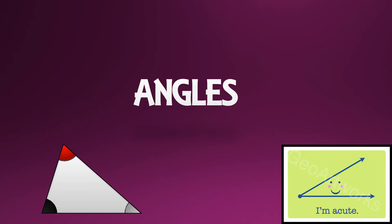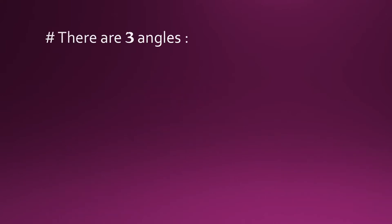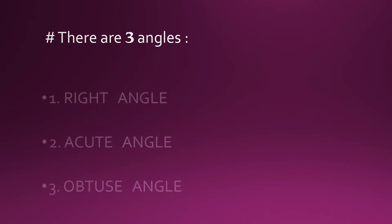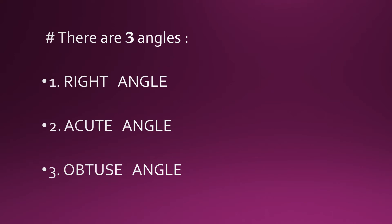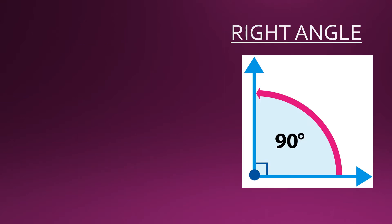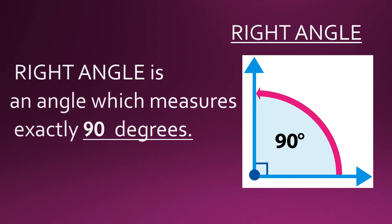Hello students, today we are going to learn about angles. There are three types of angles: right angle, acute angle, and obtuse angle. A right angle is an angle which measures exactly 90 degrees.